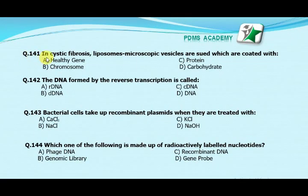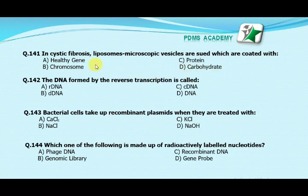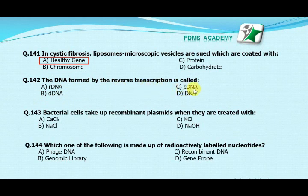Our next MCQ is: in cystic fibrosis, liposomes — microscopic vesicles — are used, which are coated with — Option A: healthy gene. Option B: chromosomes. Option C: protein. Option D: carbohydrate. Our correct answer is A, healthy gene. Our next MCQ is: the DNA formed by reverse transcription is called — Option A: rDNA. Option B: dDNA. Option C: cDNA. Option D: DNA. Our correct answer is C, cDNA, or complementary DNA.